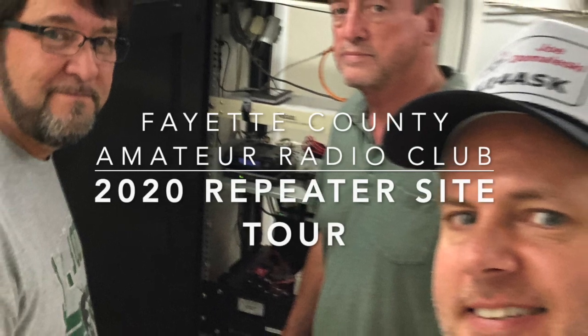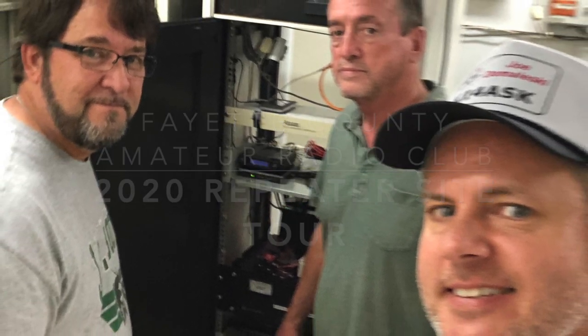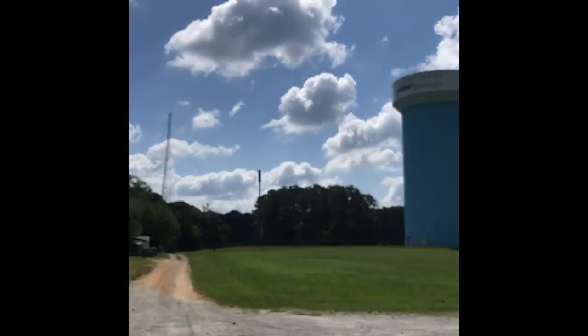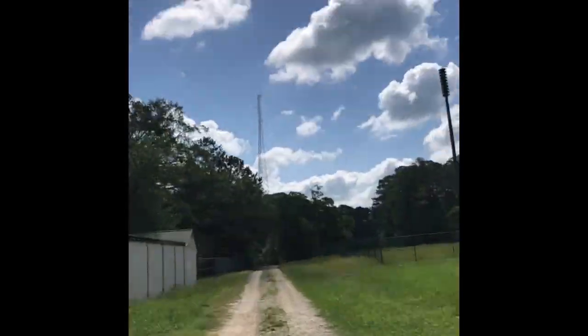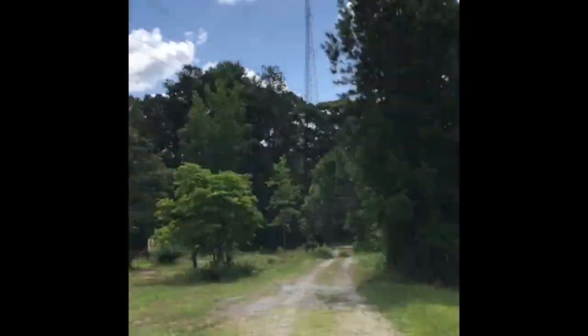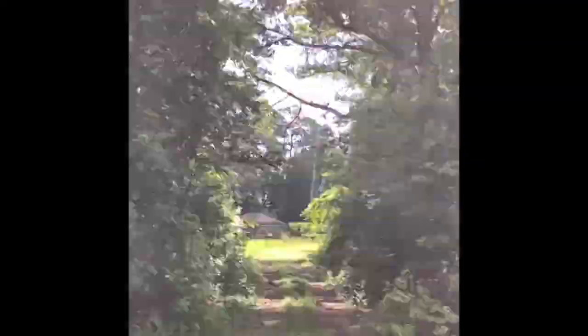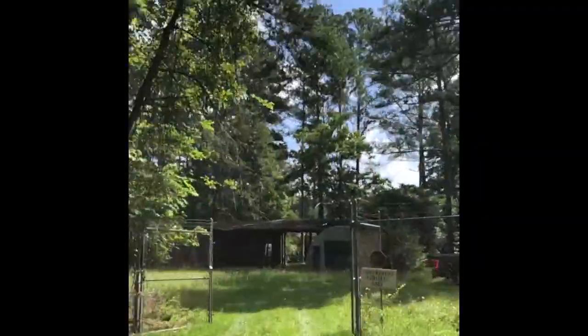This is the Fayette County Amateur Radio Club repeater site tour. We'll begin our tour by turning off of Ellis Road, heading on the dirt road past the big water tower, right to the base of the 300-foot repeater tower.